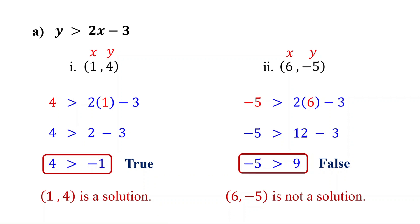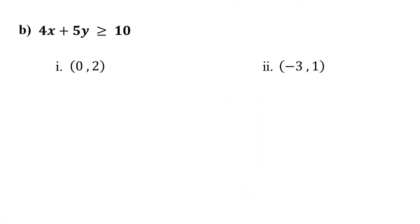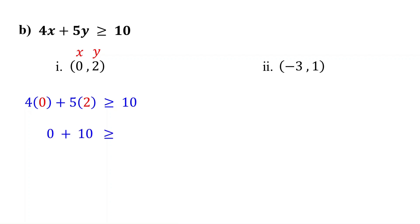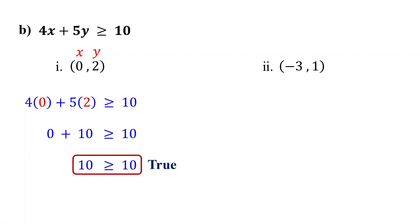Now let's try an example with a greater than or equal to inequality. For the ordered pair (0, 2), substitute 0 for x and 2 for y, then simplify. 4 times 0 is 0, and 5 times 2 is 10. 0 plus 10 is 10. This is true because 10 is equal to 10, which satisfies the greater than or equal to condition. So the ordered pair (0, 2) is a solution to the inequality.